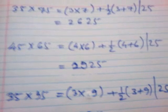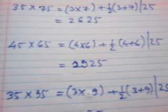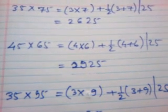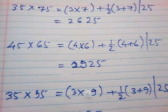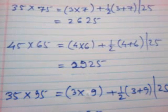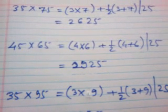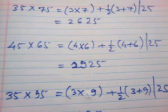Plus half of 3 plus 7. Half of 3 plus 7 is 5, and 3 into 7 is 21. 21 plus 5, 26, and as usual, 25 at the back, that is 2625.